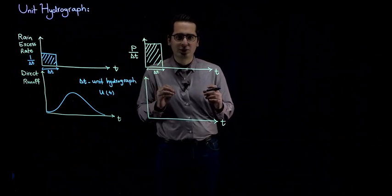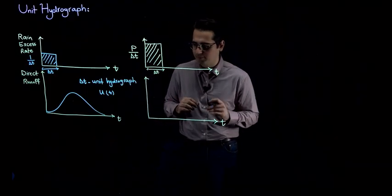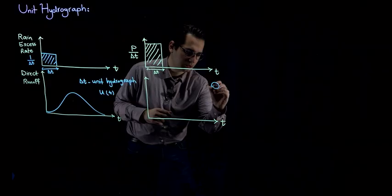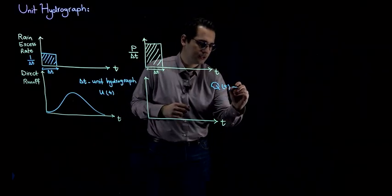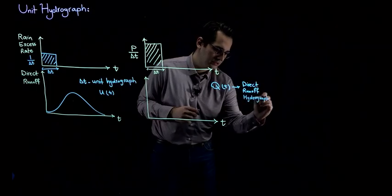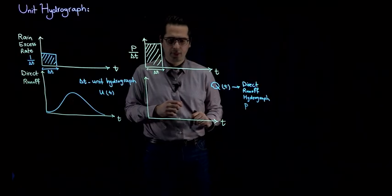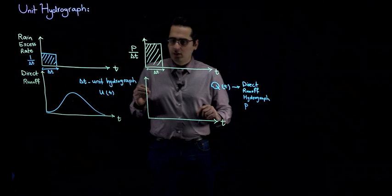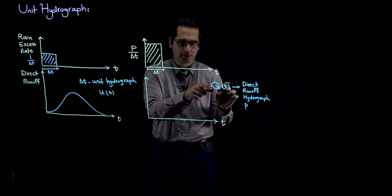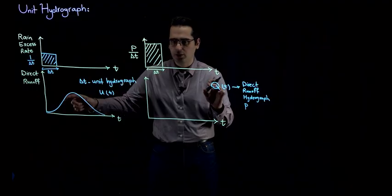First of all, we're going to have one assumption. And the assumption is the linear superposition principle. What does that mean? It means that this hydrograph over here that I'm going to create, and I'm going to call it Q(T). And this is the direct runoff hydrograph as a result of a rainfall depth of P.